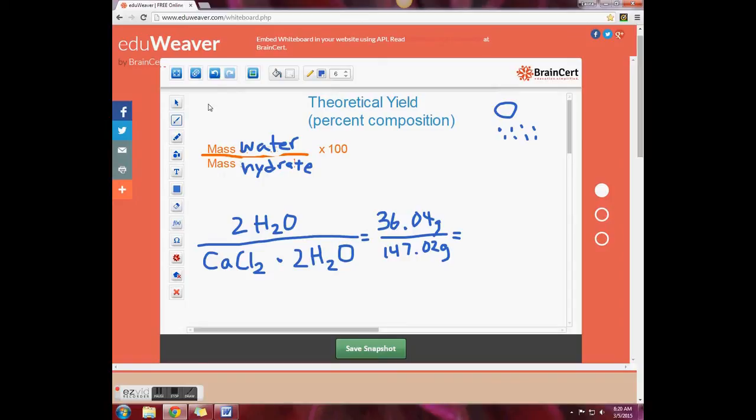Let me add the times 100 in here. So 36.04 divided by 147.02 times 100 equals 24.51 percent by mass of water. So 24.5 percent of the mass of calcium chloride dihydrate is water.